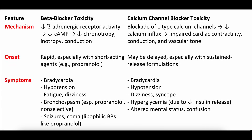We have beta blocker toxicity on the left side, calcium channel blocker toxicity on the right side, and we're going to go through the differences starting with mechanism. Beta blockers obviously block the beta receptor. There's some sodium channel receptor blocking in certain beta blockers like propranolol, and some can cross the blood-brain barrier and cause CNS effects if they're lipophilic. But the primary mechanism is decreased beta receptor activity, which typically decreases chronotropy — so heart rate — decreases inotropy or the squeeze of the heart, can cause conduction problems, and can decrease blood pressure.